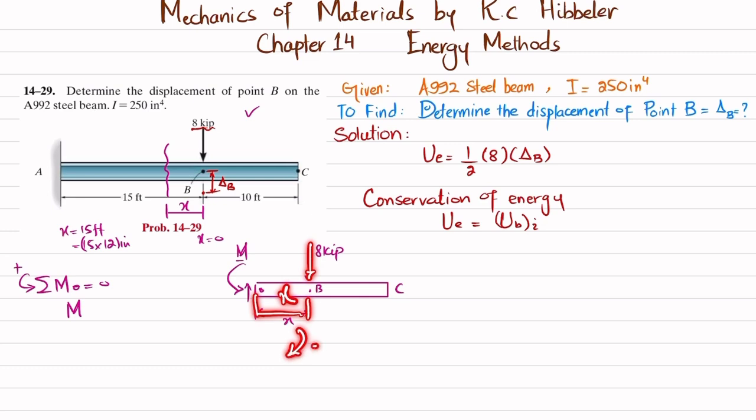The second moment is due to this 8 times the perpendicular distance x, and this is producing clockwise moment, so it will be negative: minus 8 times x. Sum of all these moments will be equal to zero, so it means that this reaction moment, our internal moment, will be equal to